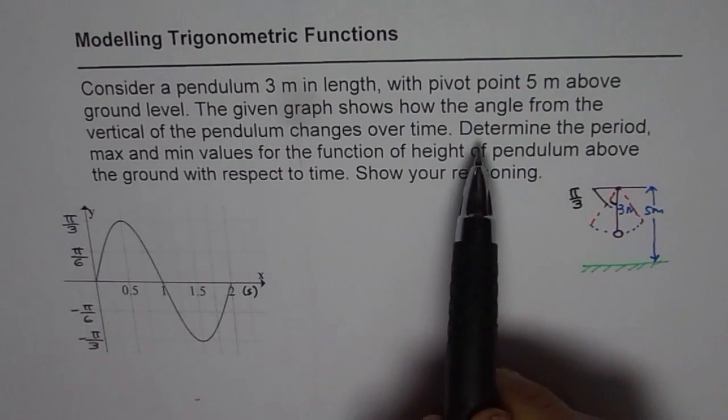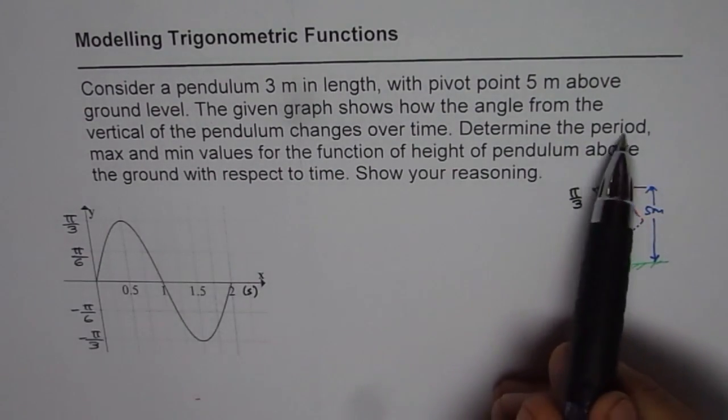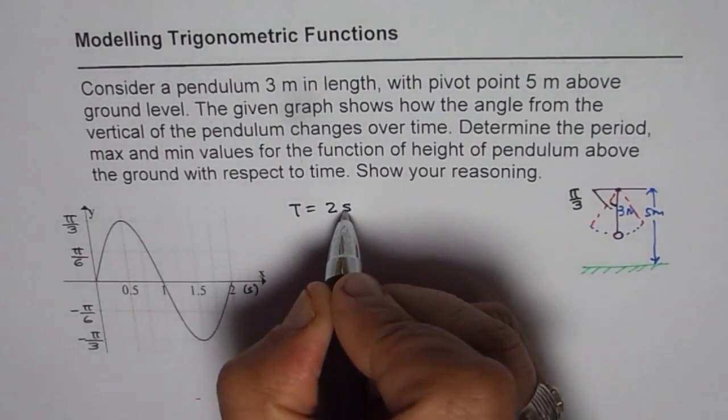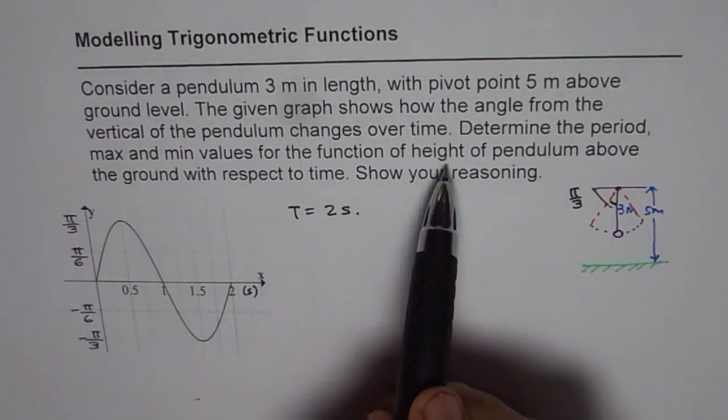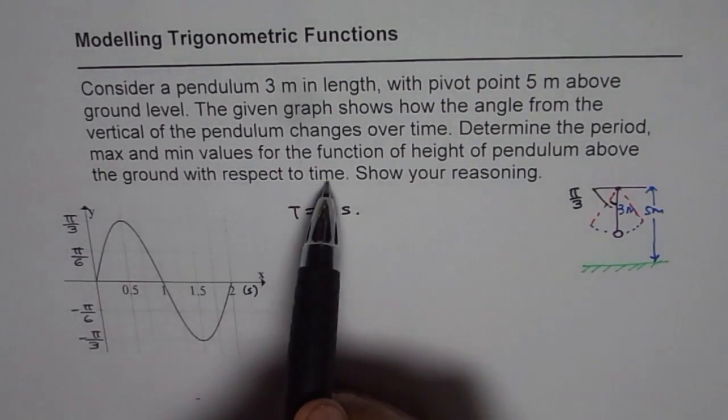Now determine the period, maximum and minimum. Now the time period is clear. So we can write time period T equals two seconds. Maximum and minimum values for the function of height of pendulum above the ground with respect to time.